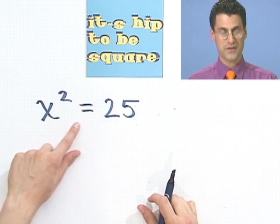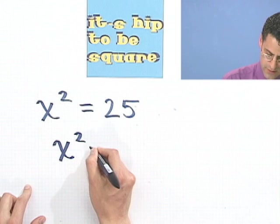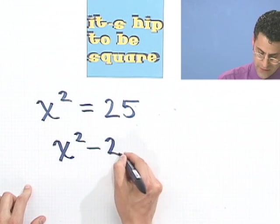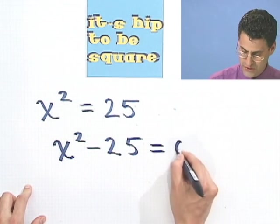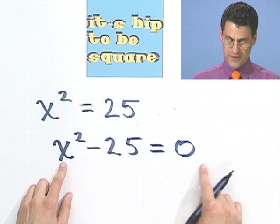Well here, I would just take this 25, I'd want to move it to the other side, so I'd subtract it, and so I'd see x squared minus 25 equals zero. Great. Okay.